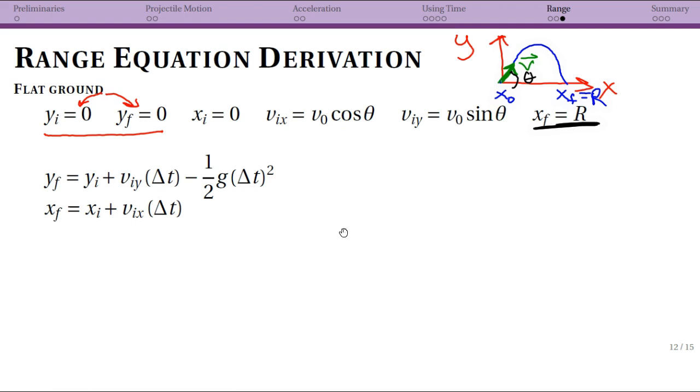Now in a previous projectile motion video I showed you how we can go from the general form down to the specific projectile motion form where we've plugged in negative g for acceleration in the y direction. So we've already used the fact that our acceleration in the y direction is negative g and that our acceleration in the x direction is 0. So that's true for projectile motion and I've already plugged that in.